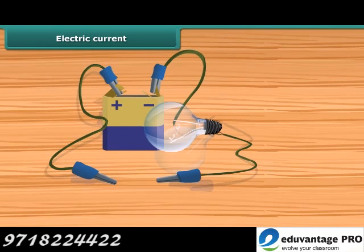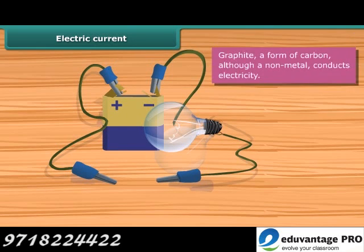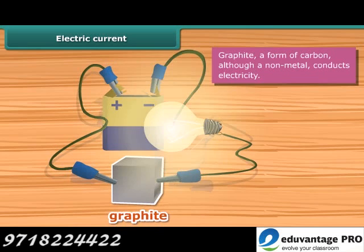Place the given material between the free ends of wires in an electric circuit. Bring the free ends of the two wires close. Now let them touch each other. If the bulb glows, the material is electrically conducting. Otherwise, it is an insulator.